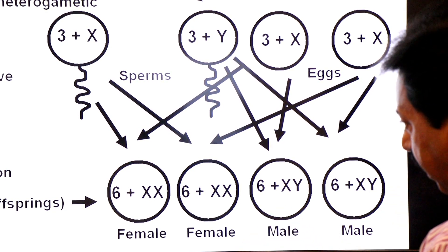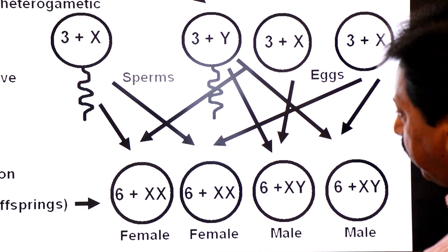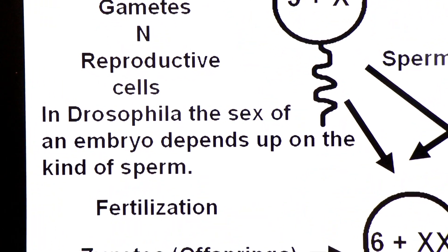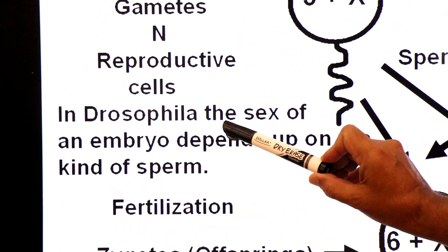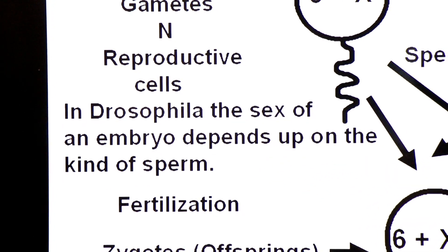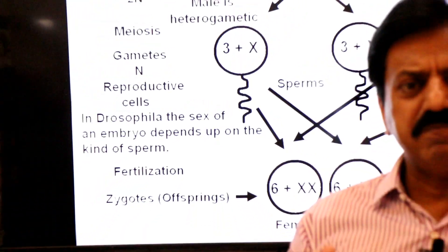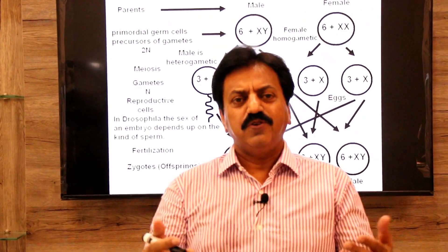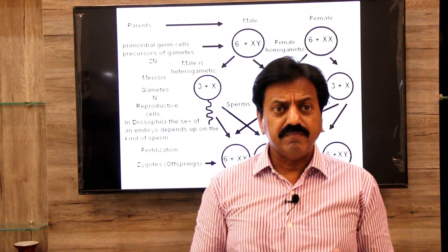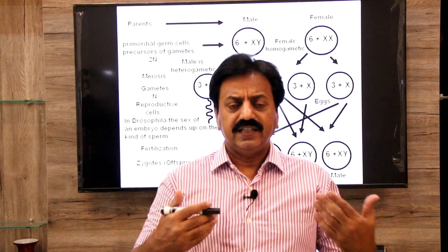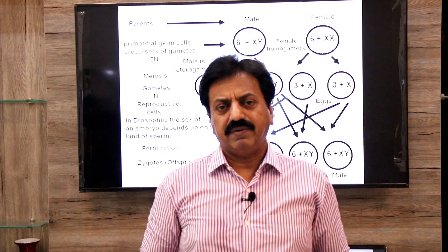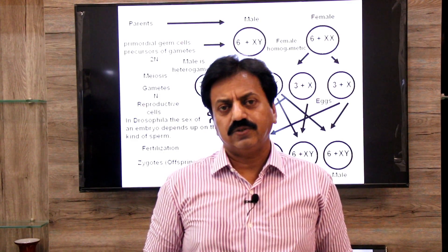Dekha aapne ke yahan pe jo sperm hai uska bahut important role hai. In Drosophila, the sex of an embryo depends upon the kind of sperm. If the sperm having X chromosome fuses with the egg, the offspring will develop into female. And if the sperm having Y chromosome fuses with the egg, the offspring will develop into male. This is how sex is determined in Drosophila. Thank you dear students, wish you all the best.